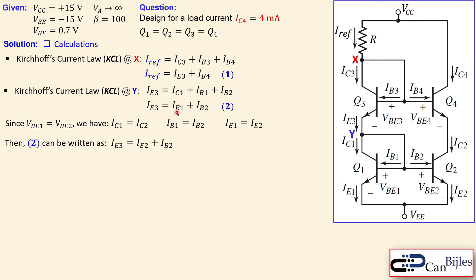Equation number two can be written as: IE3 equals IE2 plus IB2, which can be further simplified as (β + 2)IB2. Using IB2 equals IC2 over β, we have IE3 equals (β + 2)IB2, which equals (β + 2)(IC2/β). Since the base current is IC over β, we get IE3 equals (β + 2)/β times IC2.